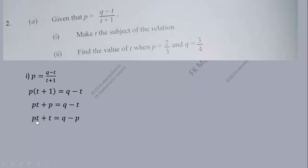Now let's collect t from here since it is common to both terms on the left. So we have t into bracket p plus one, then on the right is untouched.